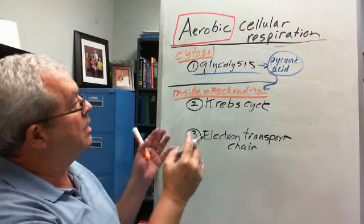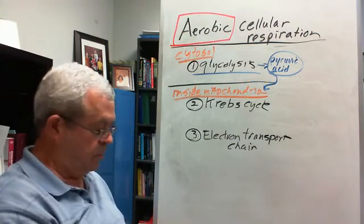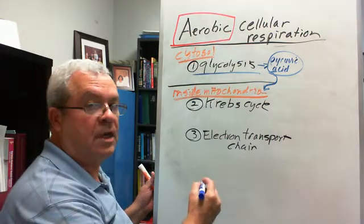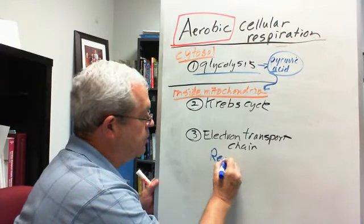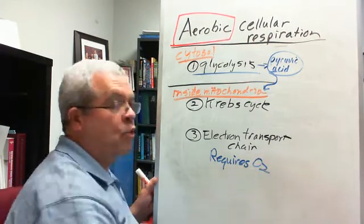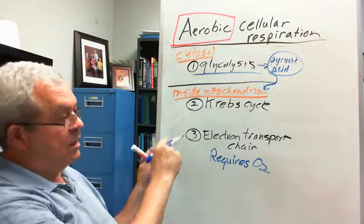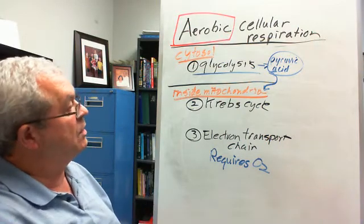All right, what else did we see in this last series of videos? We saw not only where they occur, we saw which step requires oxygen. That's crucial. Which one requires oxygen? It is this one here - the electron transport chain. So when we're sucking in O2, it's for the electron transport chain of all the bazillions of mitochondria we have in our cells.